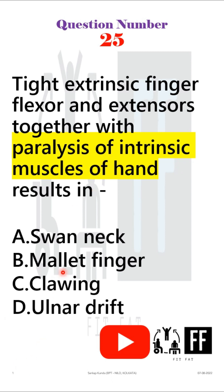But here in options A, B, and D, we know these are complications of RA where joint deformity is mainly seen because of the synovial inflammation that is ongoing.